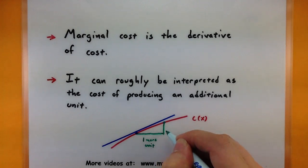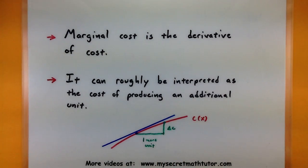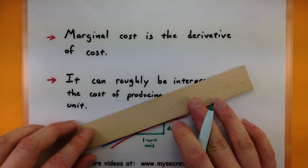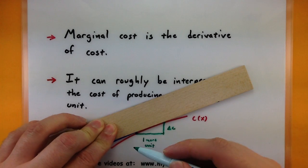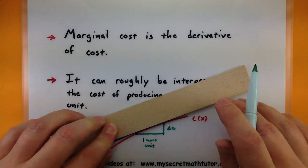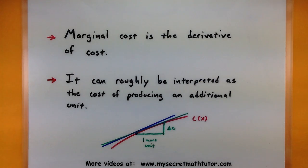And this would be like the change in our cost. Now you'll notice that these two lines are definitely not the same. One is a tangent line and one is a secant line. But since we're choosing it only one unit away, they are pretty close to one another. And we'll definitely see that when we get to my example and we start doing some calculations. So let's go ahead and get started on that example.